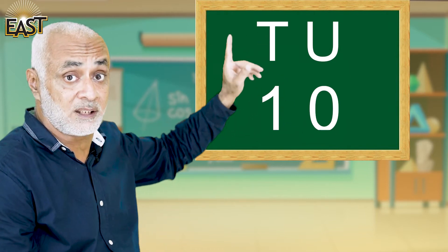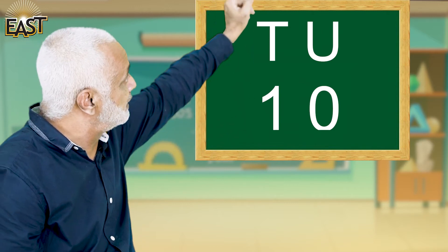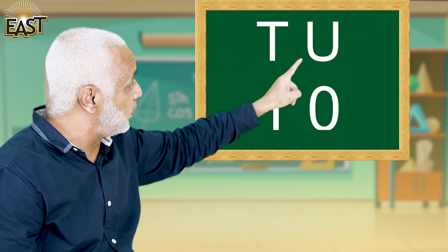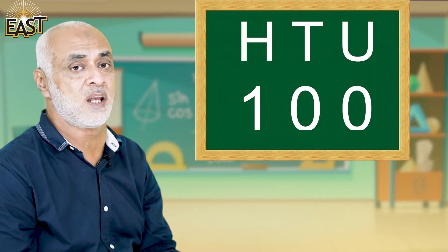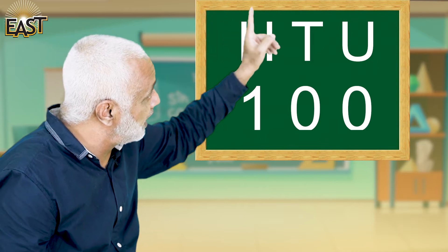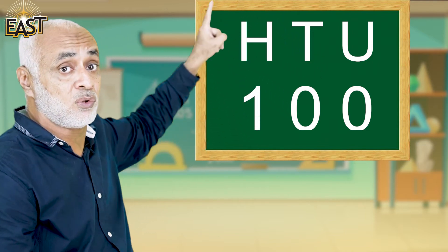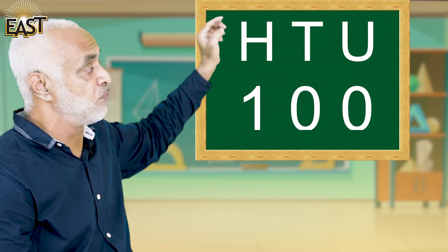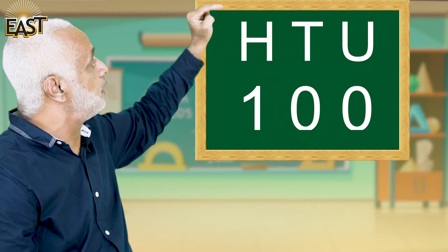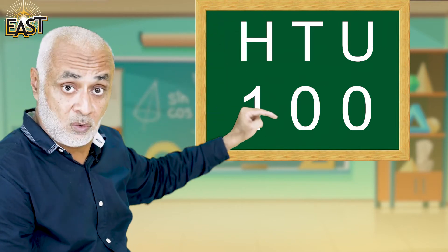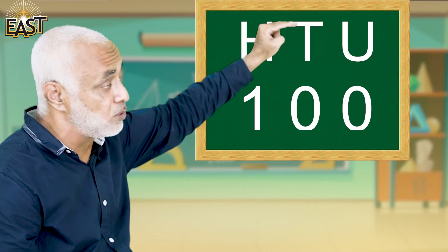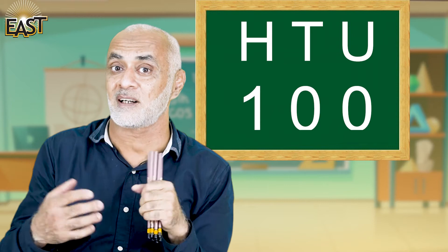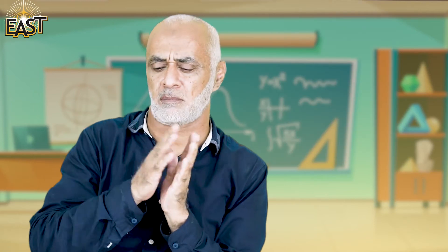Then we have one ten — T. T is for ten. So ten is written as T with a zero under it. And when we have ten tens that becomes a hundred, and for hundred we use H. Under H we write one, under T we write zero, and under U we write zero — so that becomes 100.